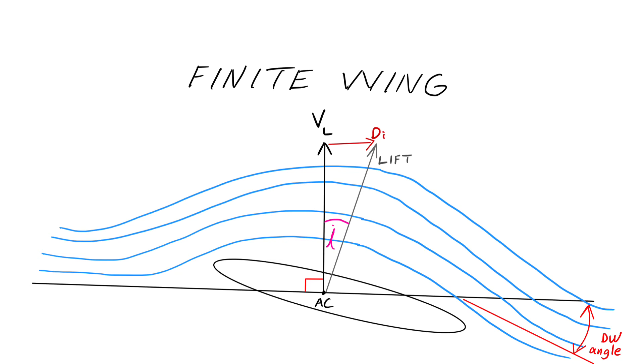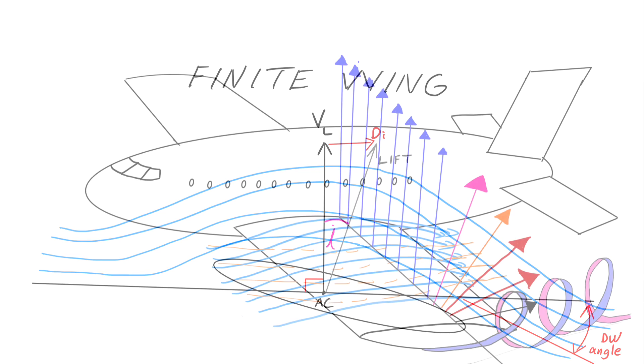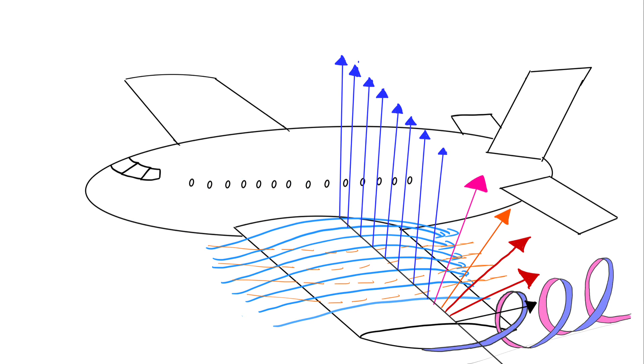And the way to minimize your induced angle of attack is to minimize wing vortexes. An increase in lift causes wing vortices. Wing vortices cause airflow distortion. And that airflow distortion is what causes the lift vector to tilt backwards. And that is your induced drag.